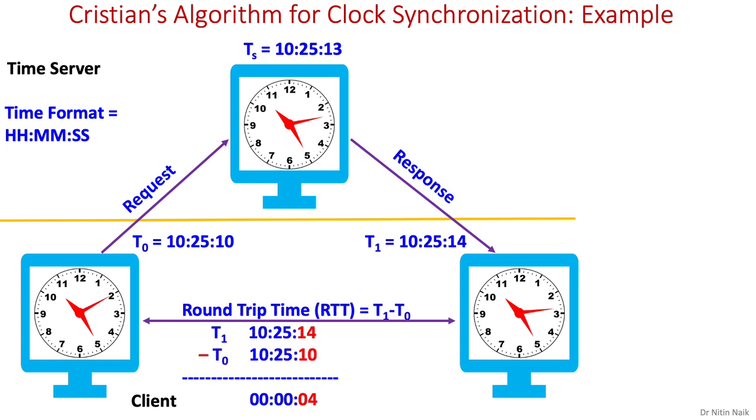Firstly, we calculate round trip time T1 minus T0, which is basically 14 minus 10 seconds, as hours and minutes are the same in both times T1 and T0. So we have a round trip time of 4 seconds, but we need to account for the time delayed in sending a reply, which is (T1 minus T0) over 2, that is 2 seconds.